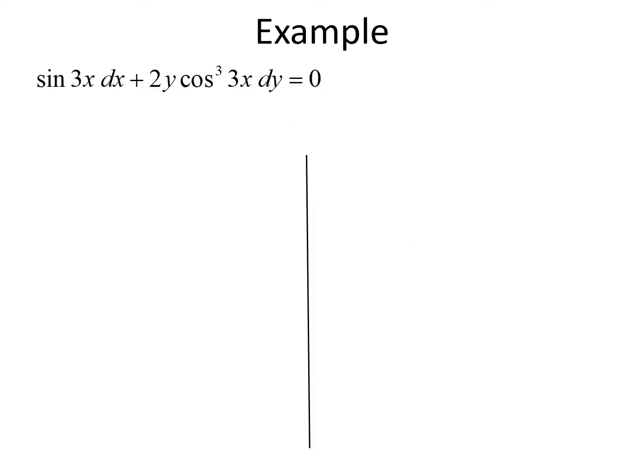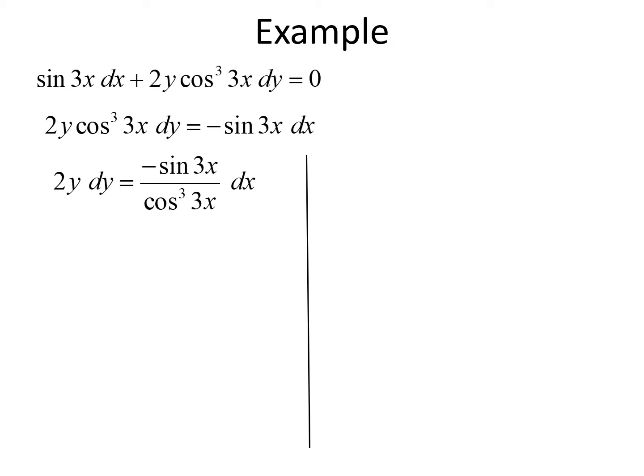Let's look at another example. We have sine of 3x dx plus 2y times cosine cubed of 3x dy equals zero. We want to separate dy and dx, so we move the term with dx to the right hand side by subtracting it over: 2y times cosine cubed of 3x dy equals negative sine of 3x dx. From here, we divide both sides by cosine cubed of 3x to get 2y dy equals negative sine of 3x divided by cosine cubed of 3x dx.